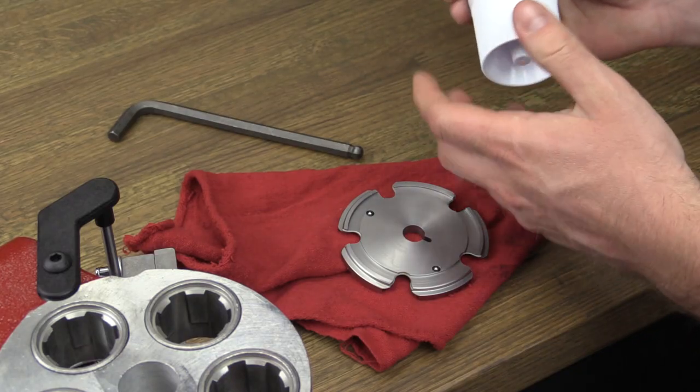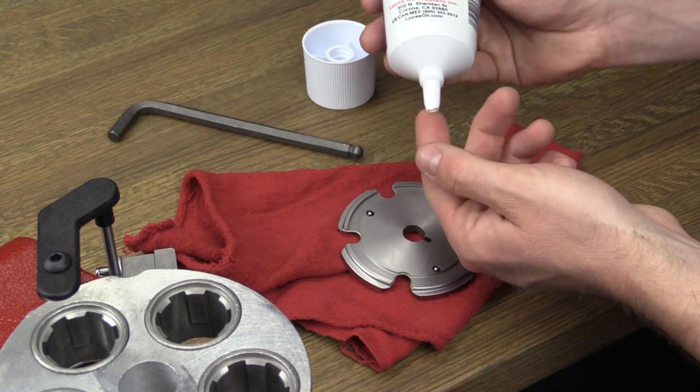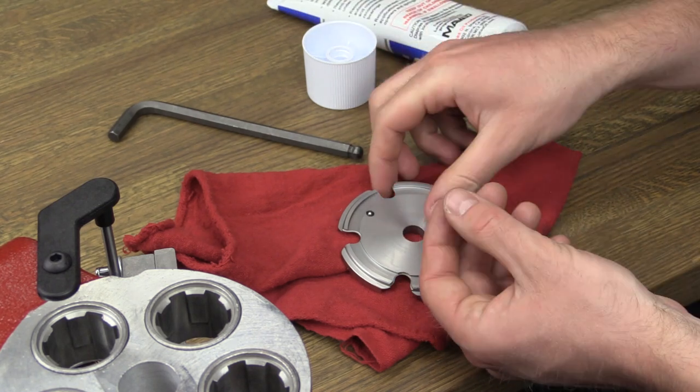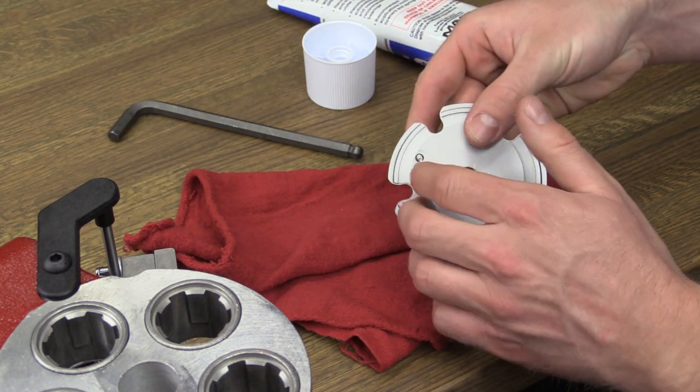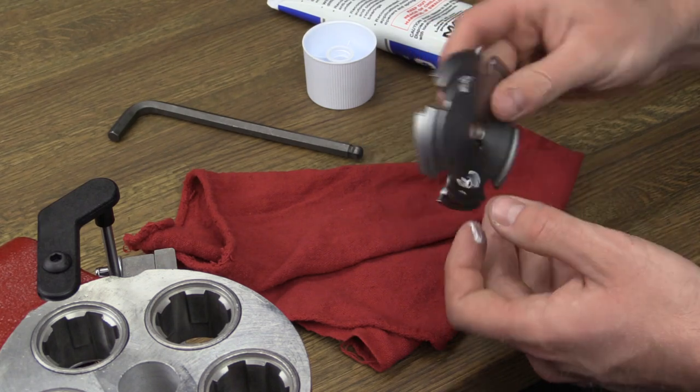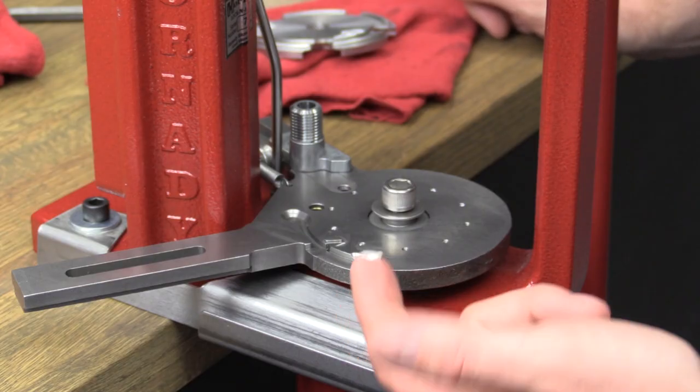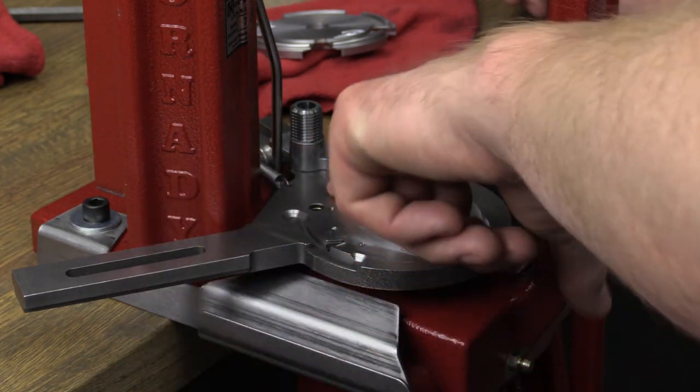After determining which shell plate is required for your application, put a small amount of general purpose grease on the shell plate ball detents located on the bottom of the shell plate and then on top of the surface of the subplate. You are now ready to install the shell plate.